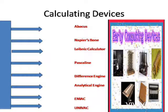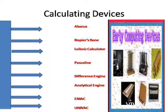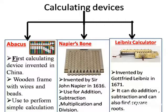First of all, we'll talk about calculating devices. As clear from the name, calculating devices are those which help us in doing calculations. We have different calculating devices, for example: Abacus, Napier's Bones, Leibniz Calculator, Difference Engine, Analytical Engine, ENIAC, and UNIVAC.